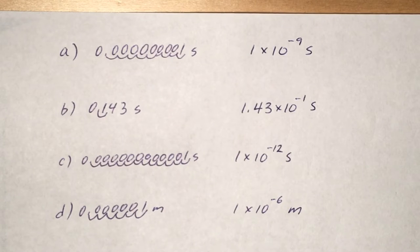In C we're going to have to move it 12 spaces to the right to be after the first significant digit, so it's going to be 1 times 10 to the negative 12 seconds. And hopefully you can see especially in that problem and in A that the zeros become really cumbersome, so writing things in scientific notation is very helpful.